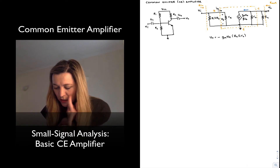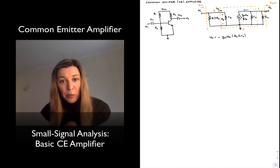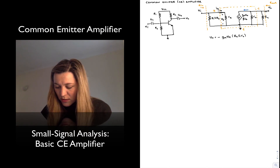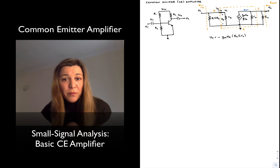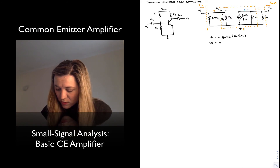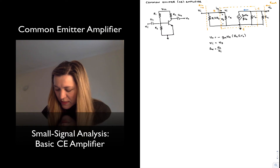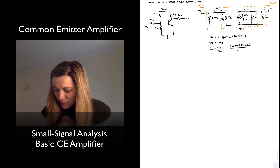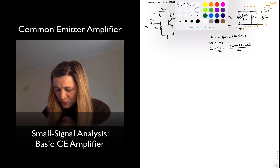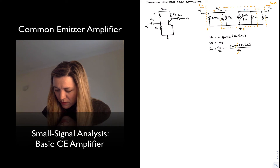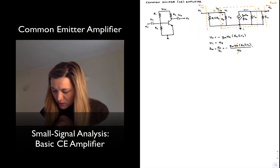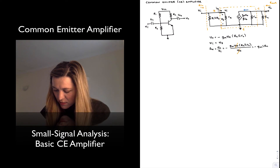The input voltage Vin is the voltage across resistor Rpi — that is equal to Vpi as labeled in the circuit. So the small signal voltage gain Vout/Vin equals negative Gm·Vpi·(RC ∥ ro) divided by Vpi. Since Vpi appears in both numerator and denominator, it cancels, and the gain simplifies to negative Gm·(RC ∥ ro).